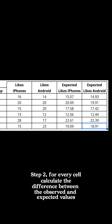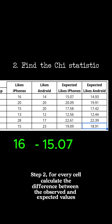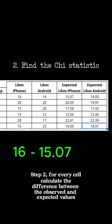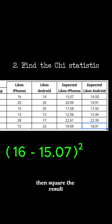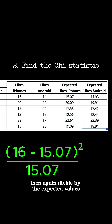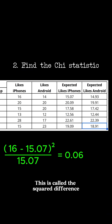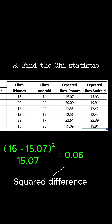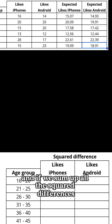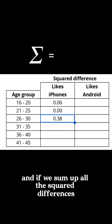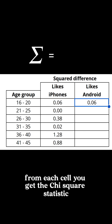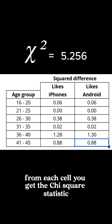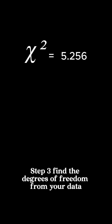Step two: for every cell, calculate the difference between the observed and expected values, then square the result, then divide by the expected values. This is called the squared difference. If we sum up all the squared differences from each cell, you get the chi-square statistic.